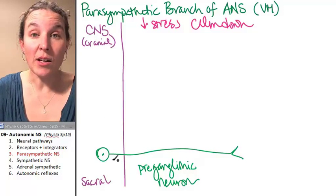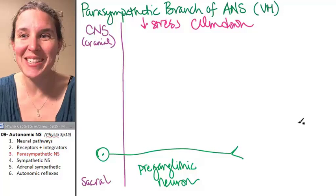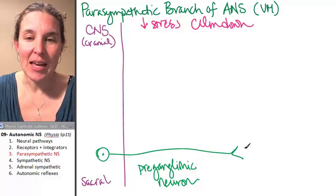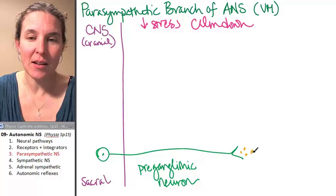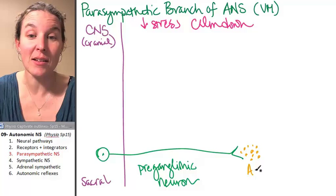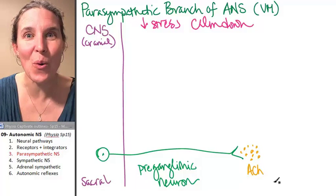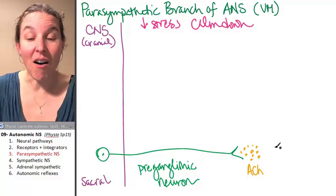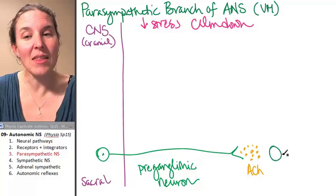The preganglionic neuron has a really cool characteristic. Are you ready for this? It dumps a specific neurotransmitter. It dumps acetylcholine on the,